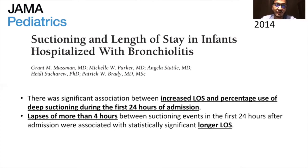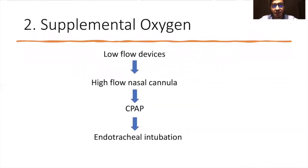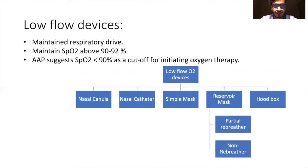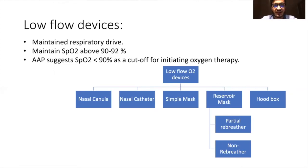Regarding supplemental oxygen, based on the oxygen demands of the child, the following devices can be used. Low-flow devices can be used in children maintaining their own respiratory drive and maintaining saturations above 90–92% at room air. AAP suggests that saturations less than 90% should be the cutoff for initiating oxygen therapy. Based on availability and need, devices include nasal cannula, catheter, simple mask, reservoir mask, or hood box.